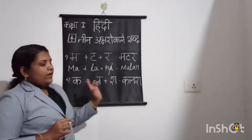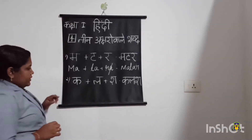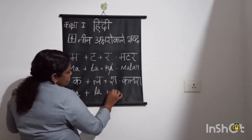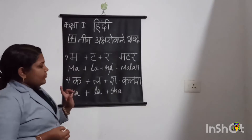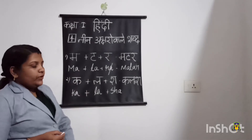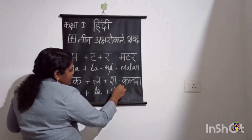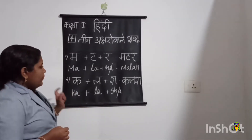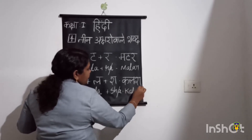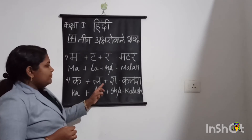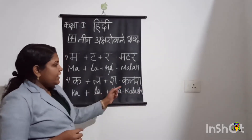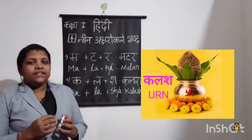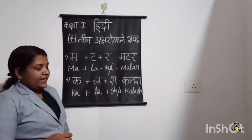Next, how to pronounce this three letter word. I am going to write Ka, then La, then Sha. In the case of three letter words, the third letter we will pronounce half only. That's why I will change this Sha to Sh. So the word is Ka-La-Sh. Say with me — Kalash. Do you know what is the meaning of Kalash? Kalash means earn. So the first word is Matar, and the second word is Kalash.